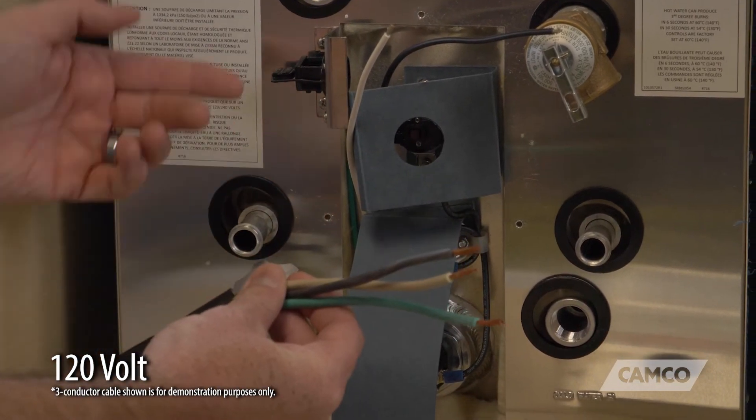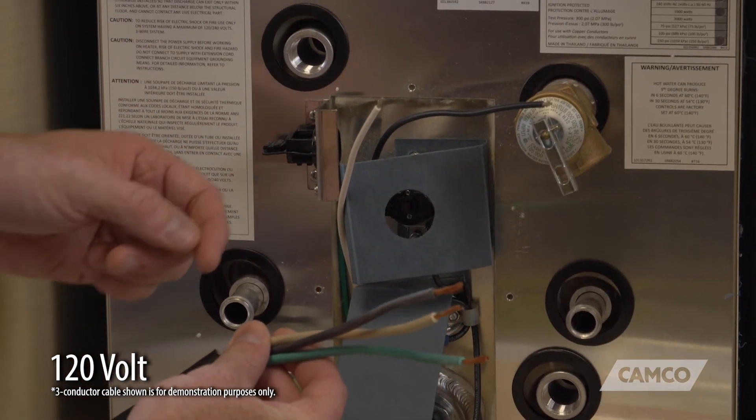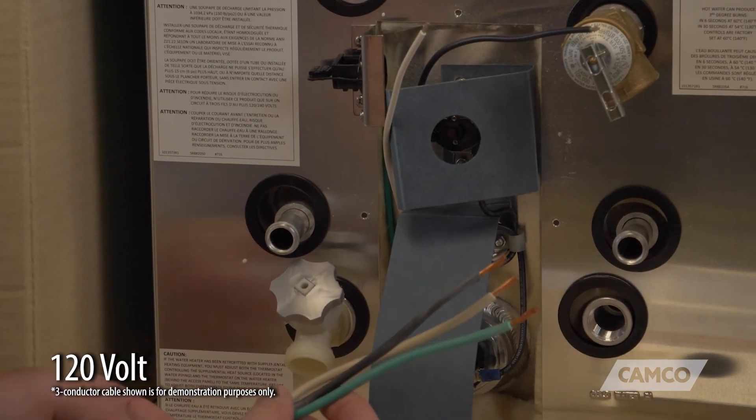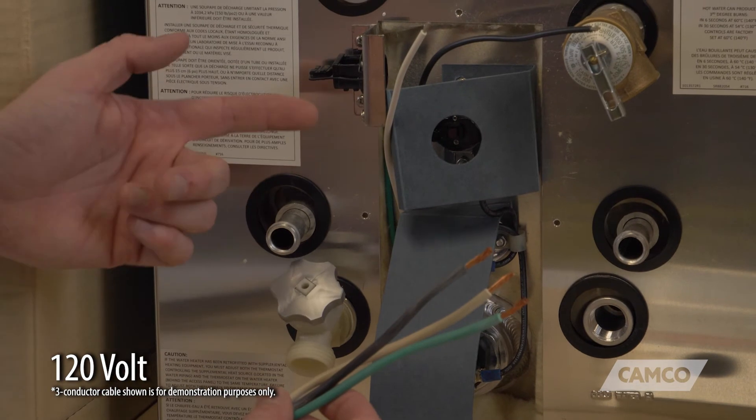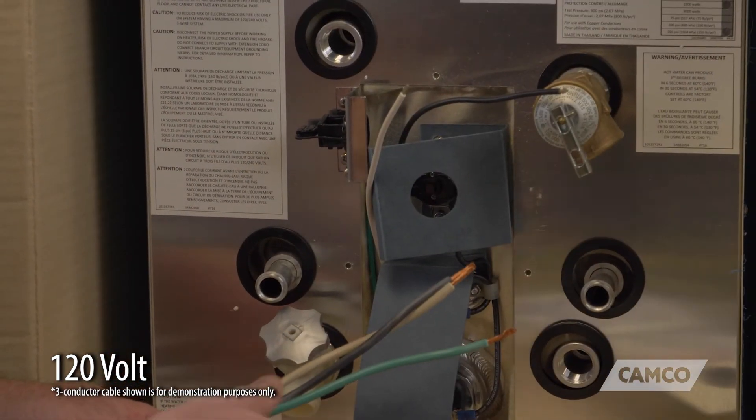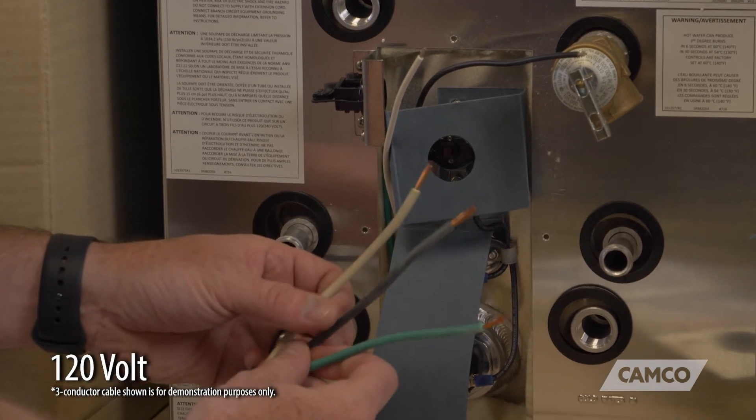You're going to run this wire through the strain relief clamp and you're going to make your connection. Depending on which version of Kuma water heater you have, your ground connection may either be on the strain relief bracket or connected to the access panel. So you're going to make your connection with your ground, green to the ground.